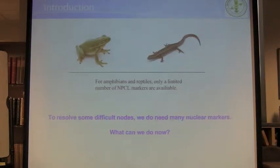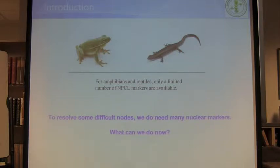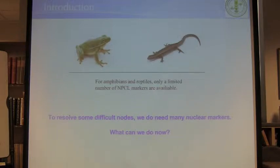But for amphibians and reptiles, only limited NPCR markers are available. If you are doing phylogenetics on amphibians and reptiles, you'll have a problem finding suitable NPCR markers. There are only very few universal markers you can use. Many people use them very often. But to resolve some difficult nodes, we do need many nuclear markers. So for my favorite group, what can we do?